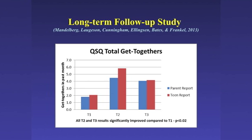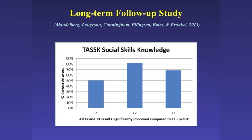We also measured whether teens learned the material. At pre, they knew about 50% of ecologically valid social skills. At post, they learned about 80% of the material. Two years later, they still retained about 70% — which is great. It's not just because of our 14-week program; it's really the parents who continue to social coach them to have get-togethers and practice all these strategies. The parent piece is truly the critical component of this intervention.